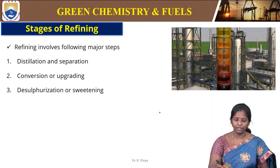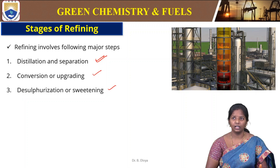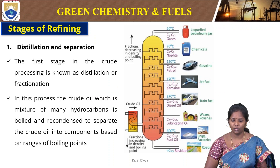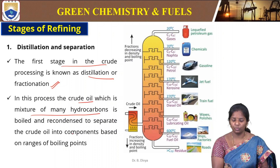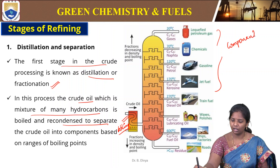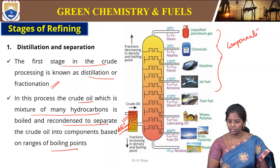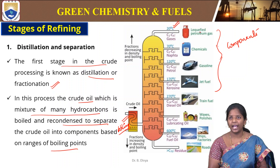The stages of refining are: distillation and separation, then conversion or upgradation, and desulphurization or treating. In the distillation stage, crude oil is separated into many hydrocarbons based on their boiling points. If the boiling point is around 20°C, then LPG gas is obtained; if it is around 70°C, it is a naphtha-type chemical.